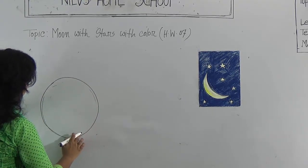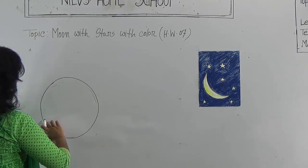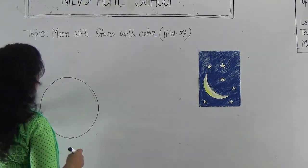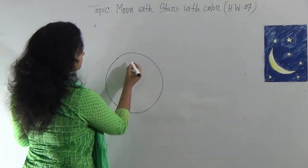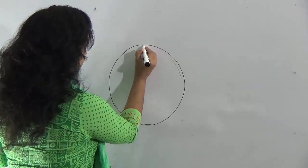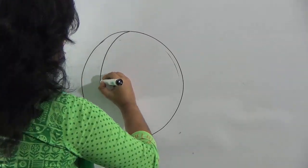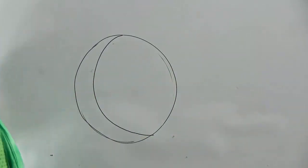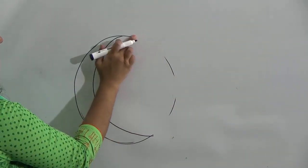But we don't draw the full moon, we draw the half moon. So you will divide this like this, okay, then you erase this line.